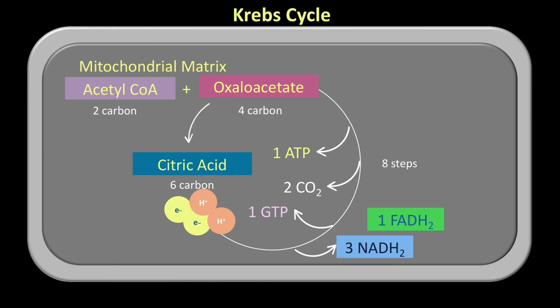As a result of this oxidation, from one molecule of acetyl-CoA we get three molecules of NADH2, one molecule of FADH2, two molecules of CO2, one molecule of ATP, and one molecule of GTP. Because the Krebs cycle is cyclical in nature, oxaloacetate is also regenerated at the end of every cycle.